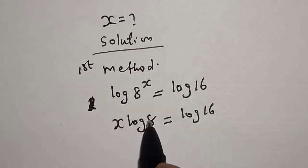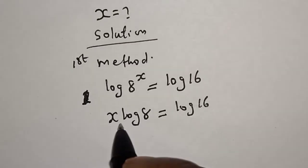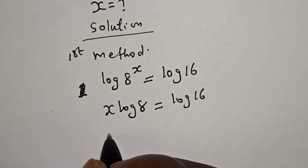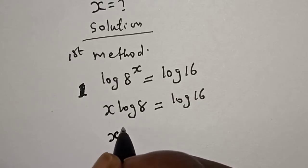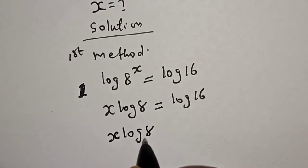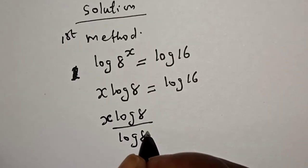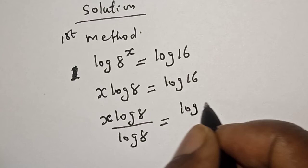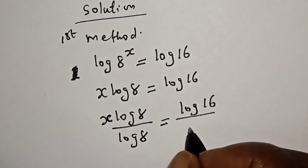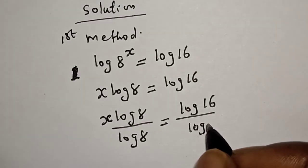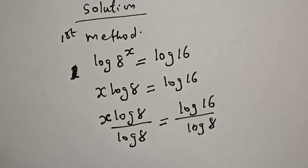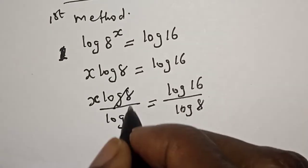Now, since we are looking for the value of x, let's divide both sides by log 8. x log 8 divided by log 8 is equal to log 16 divided by log 8. This one will cancel this.